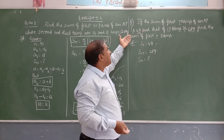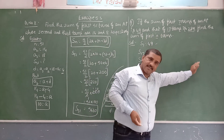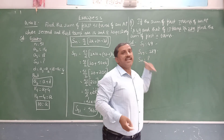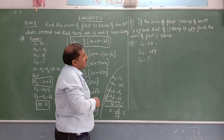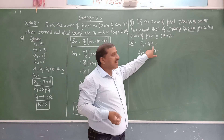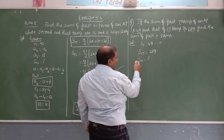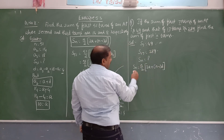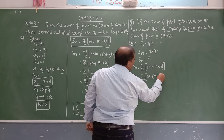Given: S7 = 49 and S17 = 289. We need to find Sn. We don't know a or d, so we must find them. Using the formula Sn = n/2 × (2a + (n−1)d), substitute S7 = 49: 49 = 7/2 × (2a + 6d).